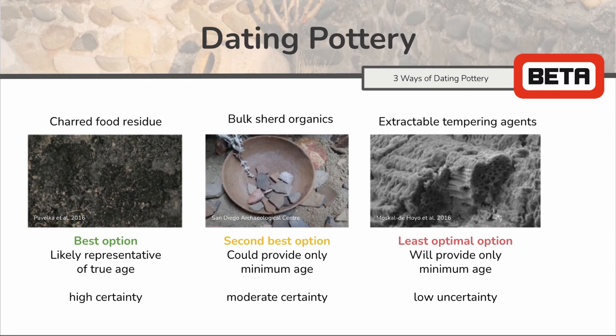The second option is the bulk shared organics. These are the organics in the clay that survived the firing and absorbed organics from food or liquid storage. This is the next best option if the food residue is not available. However, this method assumes that the plant or organic material used to create the pot was recently living before it was used. As a result, the date you receive from this method will provide you with a minimum age.